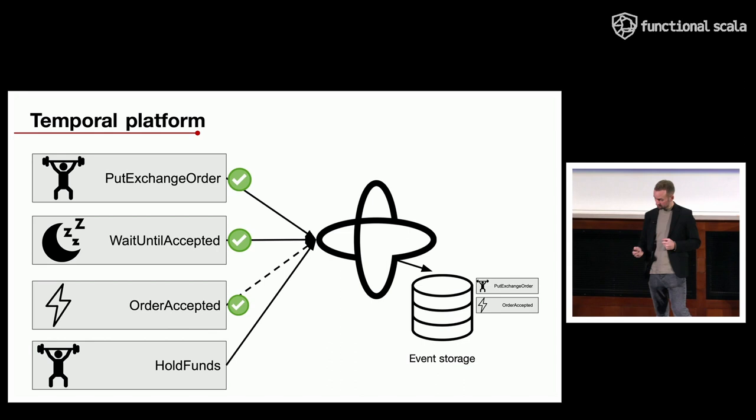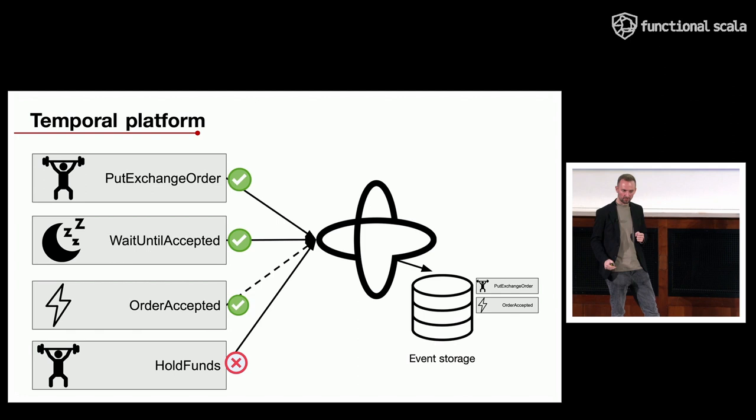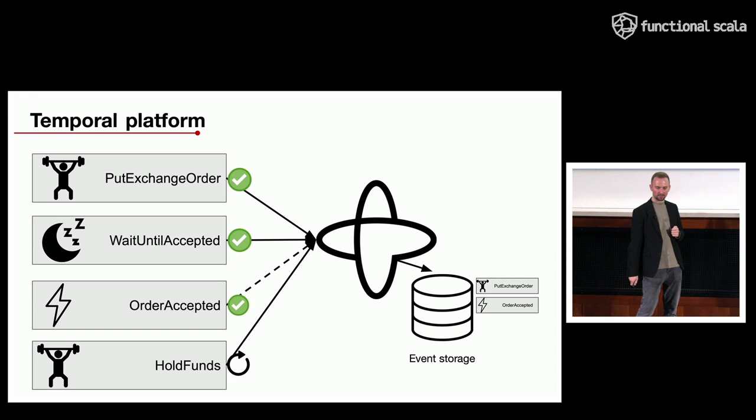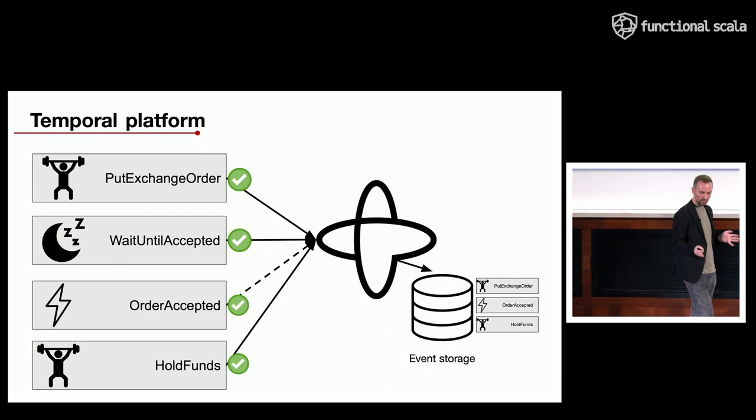Later on there may be an activity that fails, but it's not a big deal for the Temporal platform because it has all previous results stored in the event storage. Temporal is able to replay the whole workflow state up to that point, retry the failing activity, and eventually it will succeed. The platform stores the result into storage and then continues the workflow further.